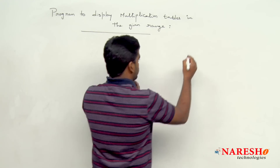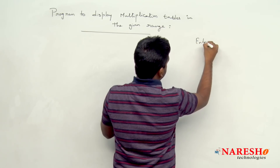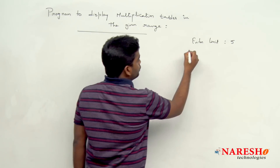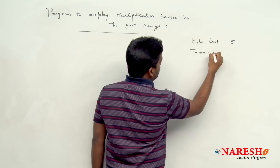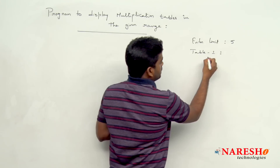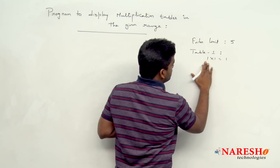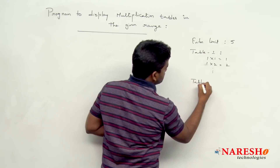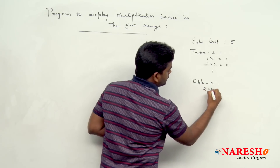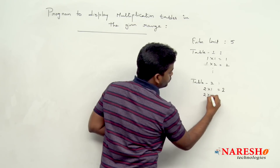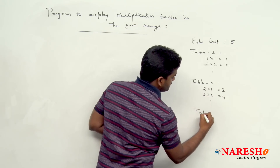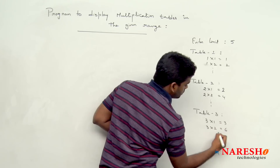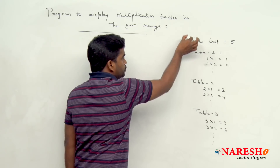For example, suppose the user enters a limit of 5. The output will show table number 1: 1 into 1, 1 into 2, and so on. Next, table number 2: 2 into 1, 2 into 2, and so on. Then table number 3: 3 into 1, 3 into 2, like this it will display. The output should be in this format.